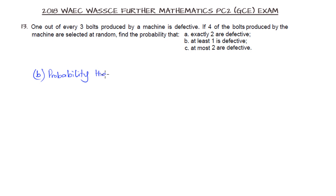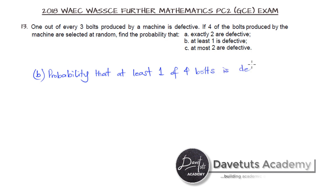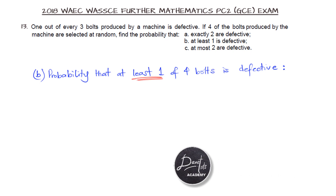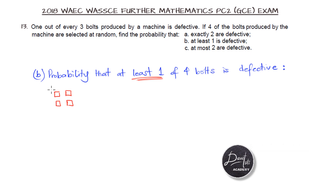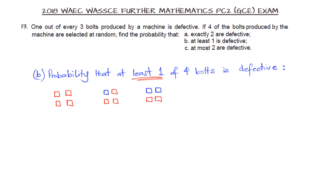For question B, we find the probability that at least one of the 4 boats selected is defective. Rather than evaluating 1 defective, 2 defective, 3 defective, and 4 defective separately, we work smarter. Pictorially, the case with no defective boats is just one standalone scenario, and all remaining scenarios — 1, 2, 3, or 4 defective — are the cases of at least one defective.